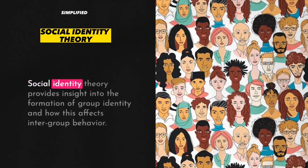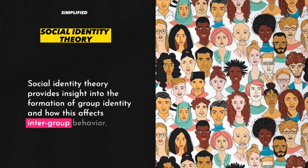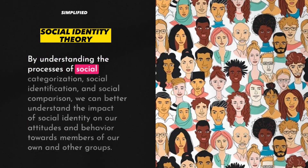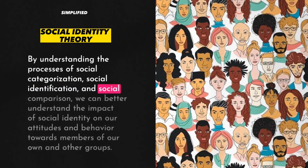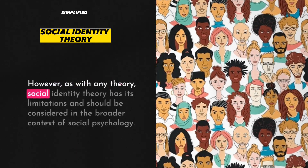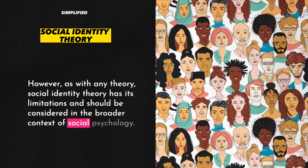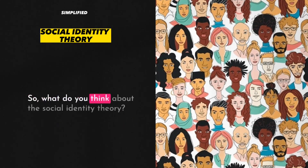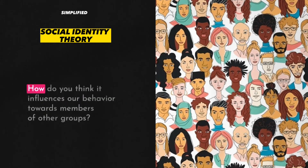Conclusion. Social Identity Theory provides insight into the formation of group identity and how this affects inter-group behavior. By understanding the processes of social categorization, social identification, and social comparison, we can better understand the impact of social identity on our attitudes and behavior towards members of our own and other groups. However, as with any theory, Social Identity Theory has its limitations and should be considered in the broader context of social psychology. So, what do you think about Social Identity Theory? How do you think it influences our behavior towards members of other groups?